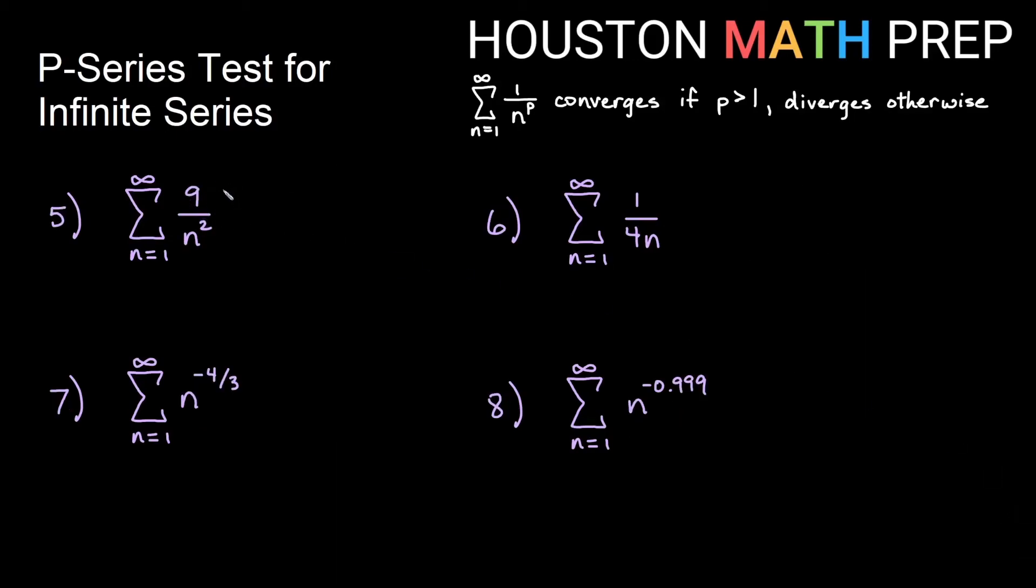Looking over here, just having a 9 on top isn't going to change anything. 9 times something that converges or diverges doesn't change the behavior. You can think of this as 9 times the sum of 1 over n squared. This is a p-series where p equals 2. 2 is greater than 1, so this converges by the p-series test.